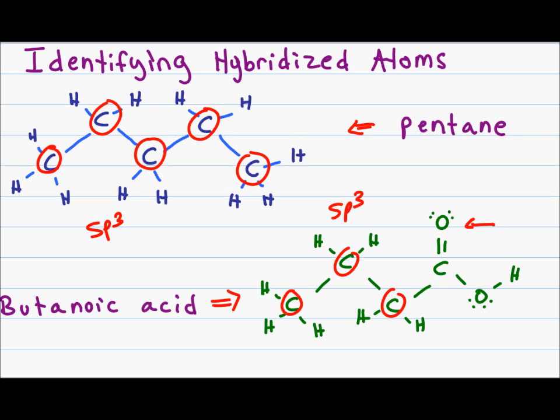Here we have an oxygen and a carbon both sharing a double bond. Since each of them has one pi bond, they are both sp2 hybridized. On the bottom, we have an oxygen that has only single bonds and electron pairs, so this falls under the sp3 category.